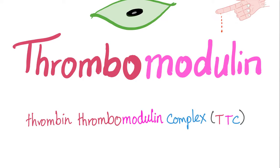Another day, another video about bleeding and coagulation disorders. In the previous videos, we talked about the D-dimer, the plasminogen activator inhibitors, and the alpha-2 anti-plasmin. Today, we'll talk about the genius — an actual genius called thrombomodulin, which modulates thrombin from being pro-coagulation into being anti-coagulation. Genius! With that being said, let's get started.